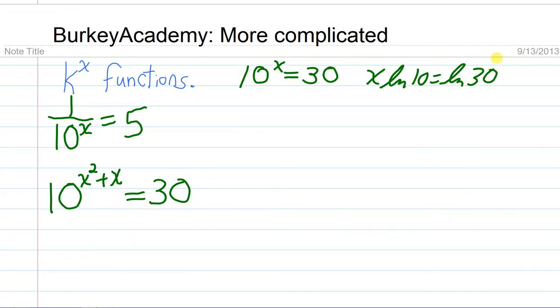So the natural log operation, you take the natural log of a number and then you multiply by an exponent. So that turns into x times the natural log of 10, natural log of 30 on the right side. And then on your calculator, all you have to do is find the natural log of 10 and the natural log of 30, pause the video and do that.